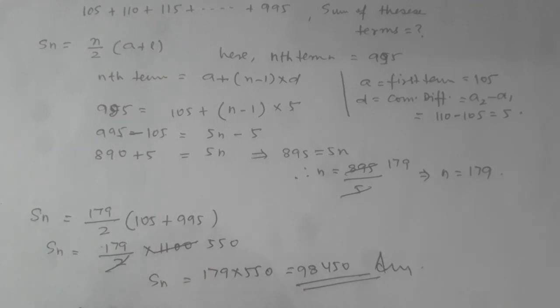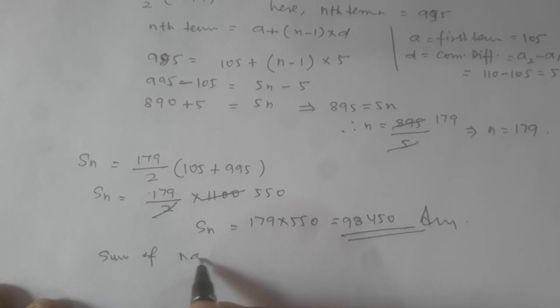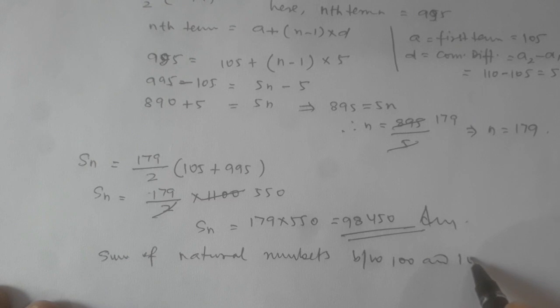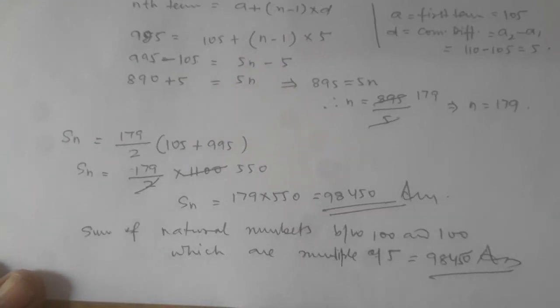So the sum of natural numbers between 100 and 1000 which are multiples of 5 equals 98450. This is the answer. I hope you will please like, share, and subscribe to this channel. Thanks.